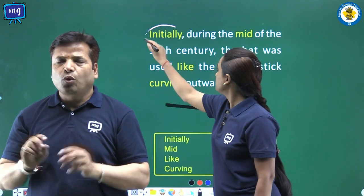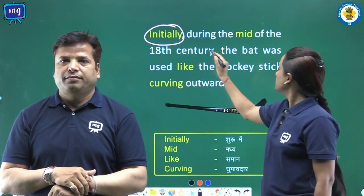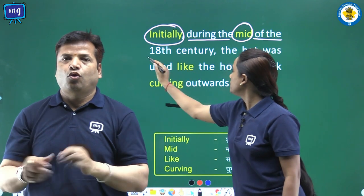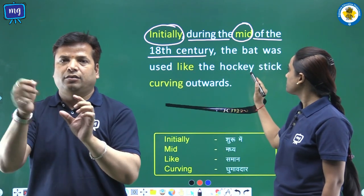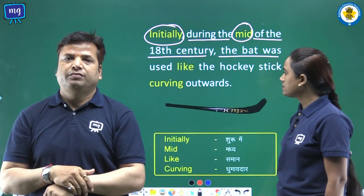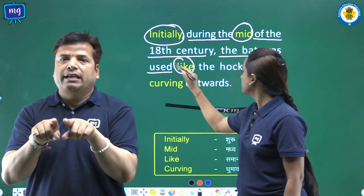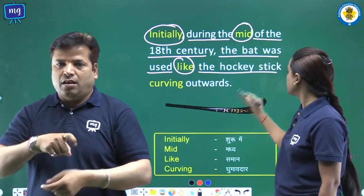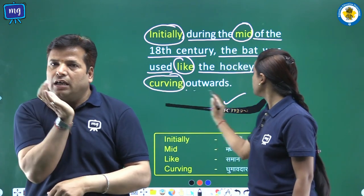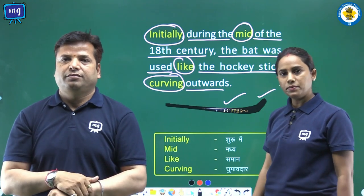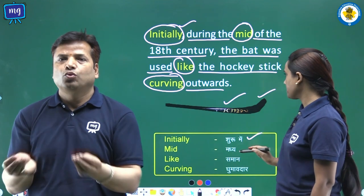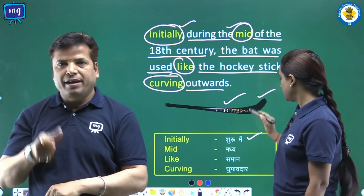Initially, during the mid of the 18th century, the bat was used like the hockey stick, curving outwards. Word meanings: initially — shuru mein; mid — madhya.